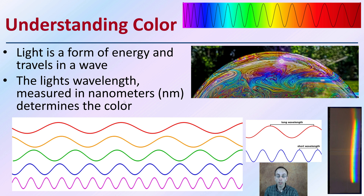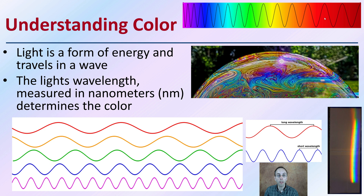We can see here the red wavelength has a red coloration, and then we have the green and we have the blue. We have all these different wavelengths. Red has a longer wavelength than blue, and that allows us the separation of colors, as also represented here in the upper portion.